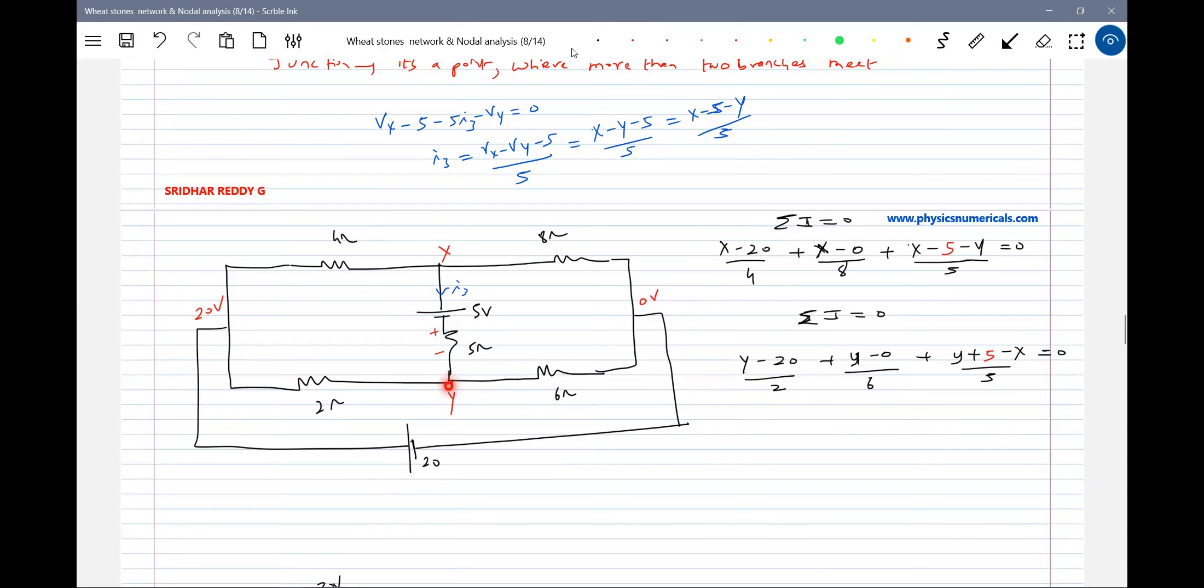Similarly, let me write nodal equation for this: Y minus 20 by 2, Y minus 0 by 6, Y plus 5. Because I move from negative to positive, the equation will be like this.